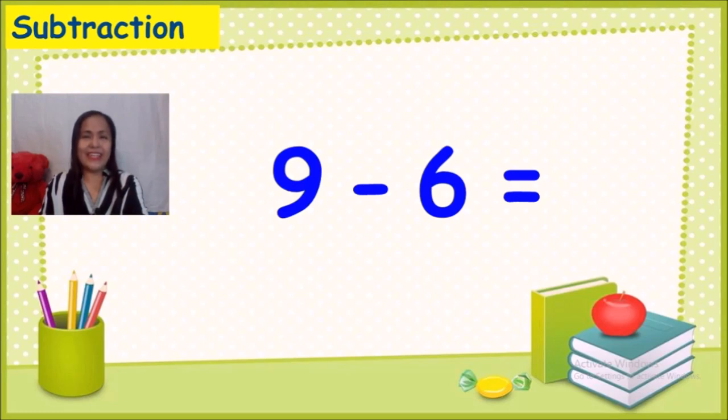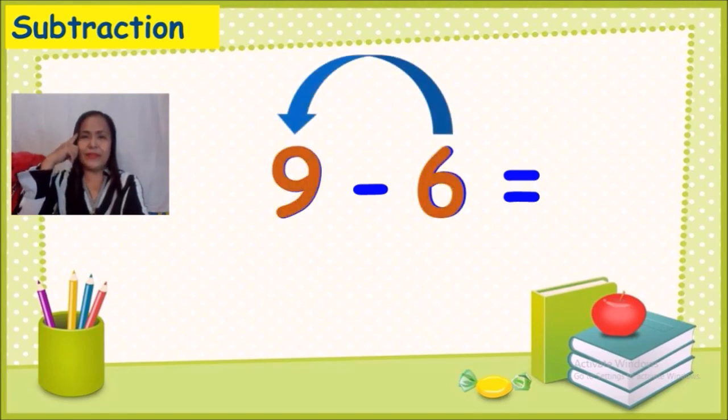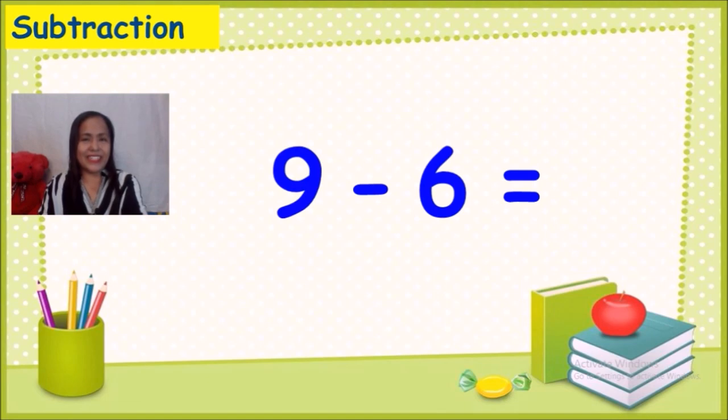Again, let's get the second number. Put it in our mind, then count up to the first number. Six, seven, eight, nine. How many numbers do we have now? Okay, three. Nine minus six equals three.